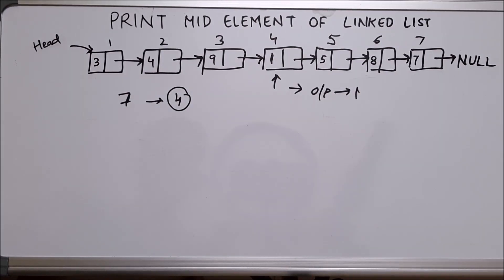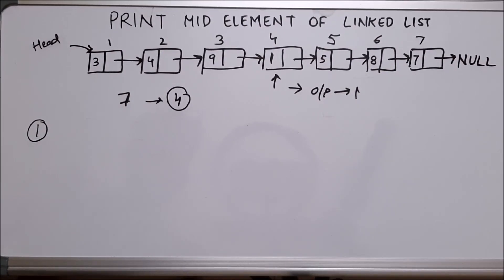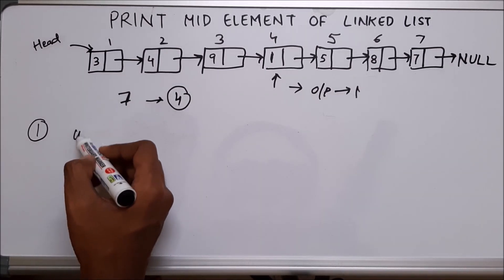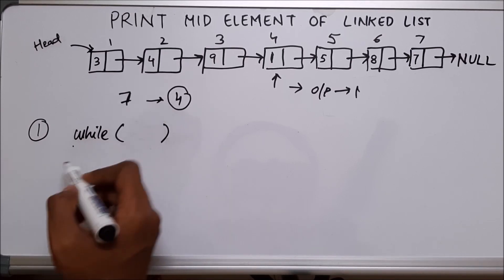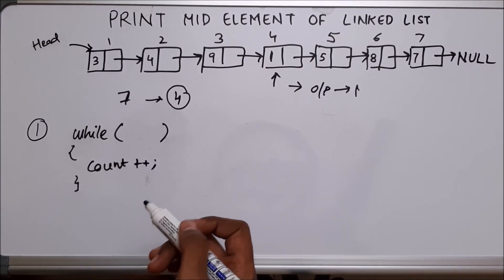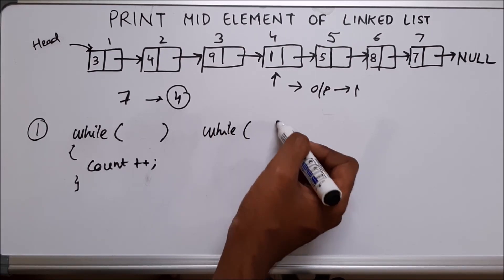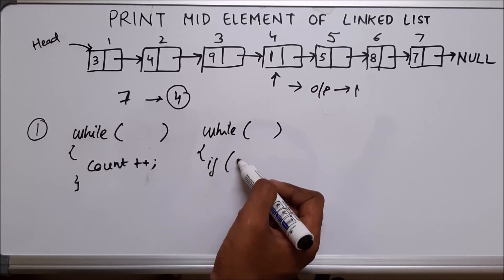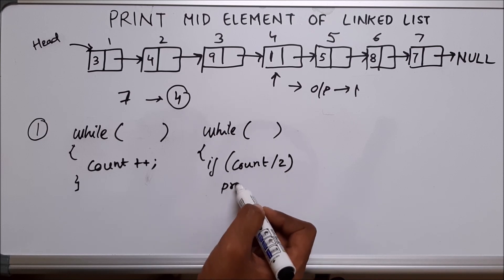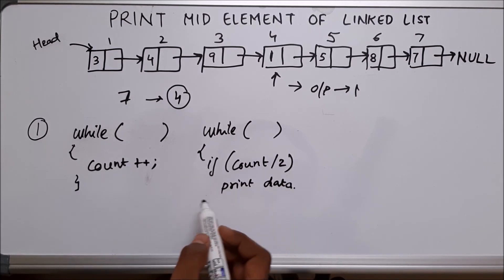I'll show you two approaches to do this. The first approach will be to count how many nodes are present in the linked list. You will use a while loop to traverse the linked list and keep incrementing count. Once you get the count, you will again traverse the linked list and when you reach the node at count divided by two, you print the data. This is a very simple approach.